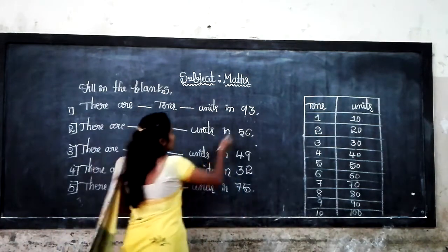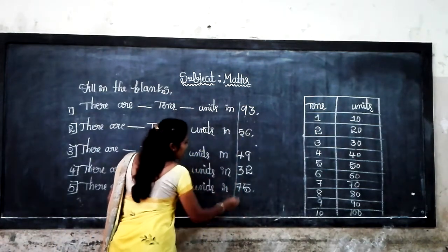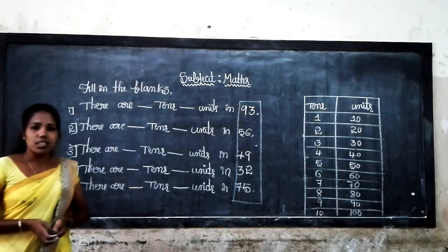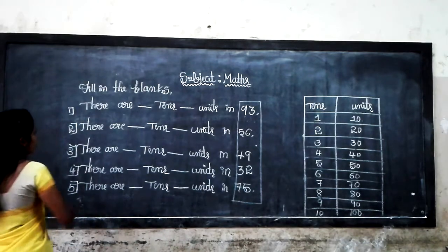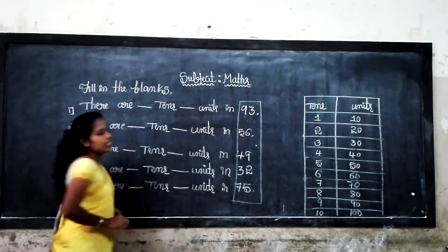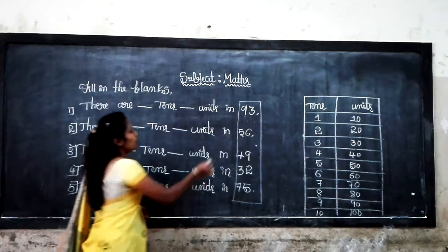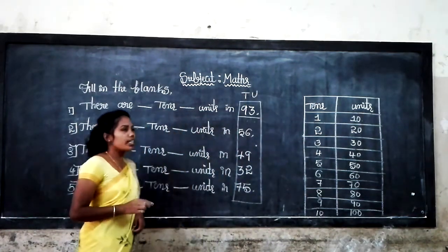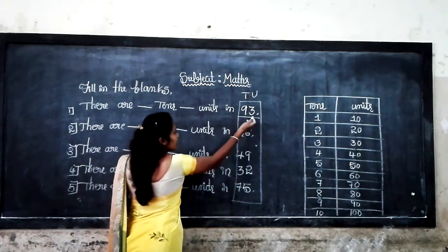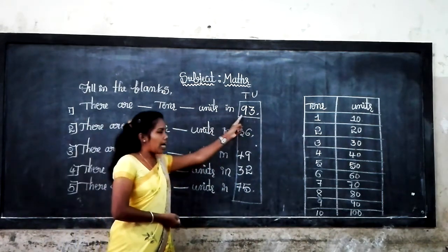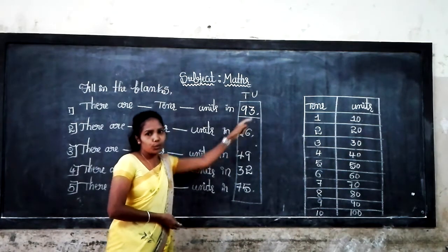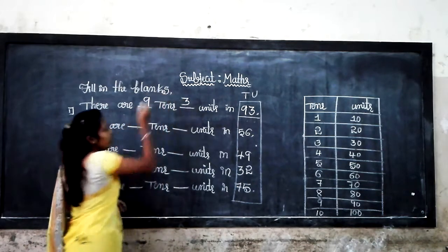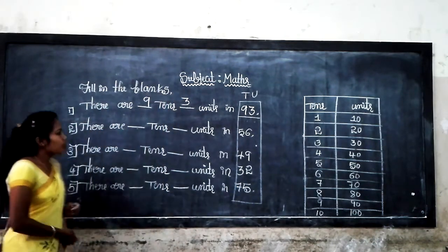Look at these numbers. You observe these numbers — now you can find out easily which are the tens and which are the units. Firstly, there are dashes and dashes units in 93. You get here tens and units. How many tens and how many units? In 93, there are 9 tens and 3 units. Let's come to the next one.